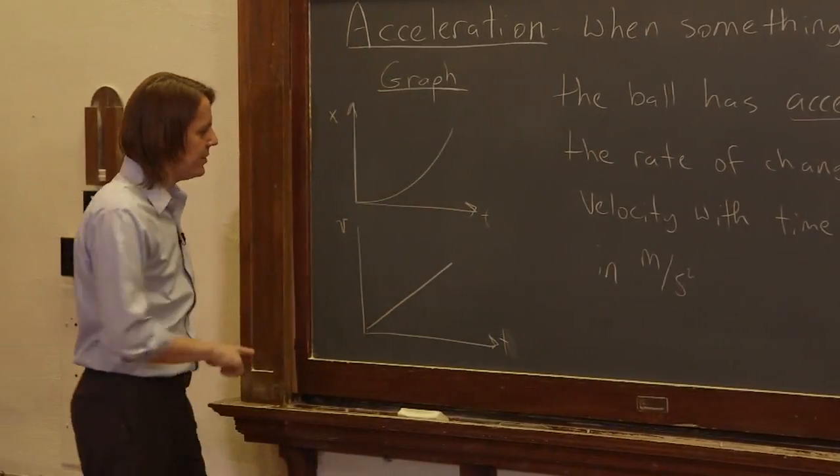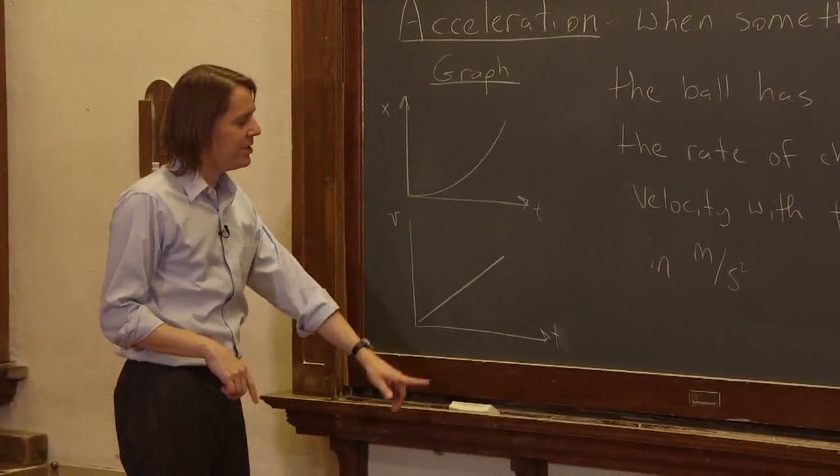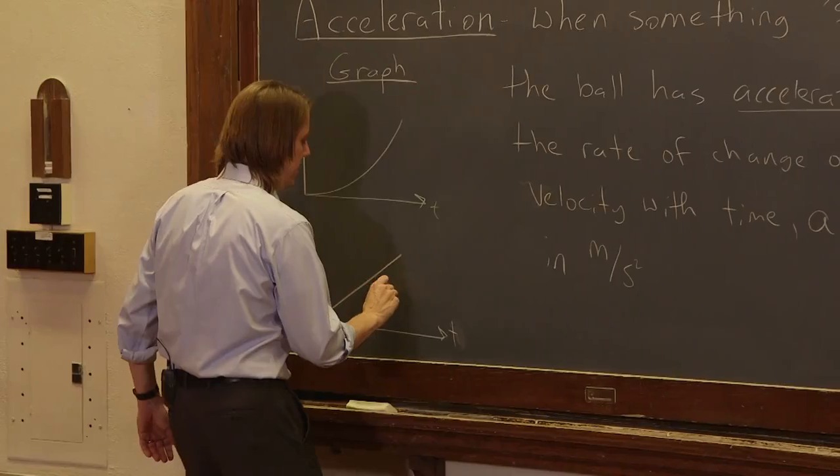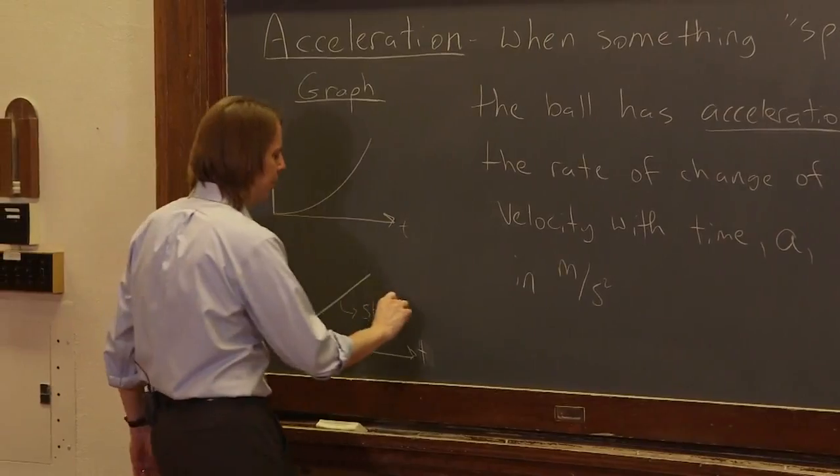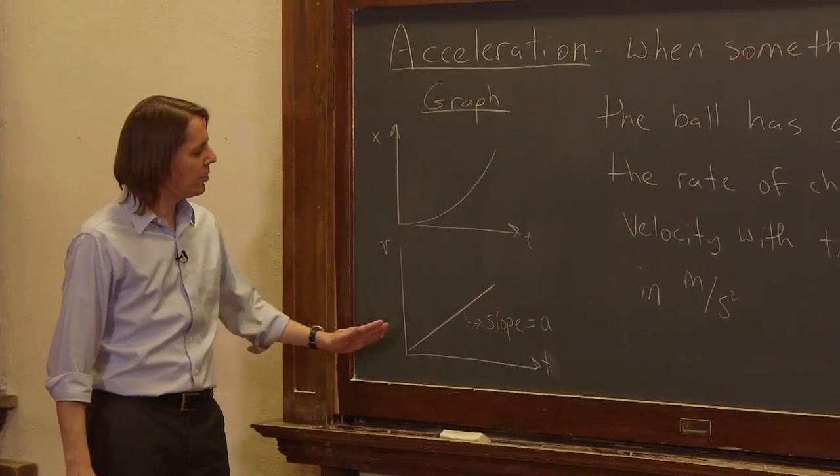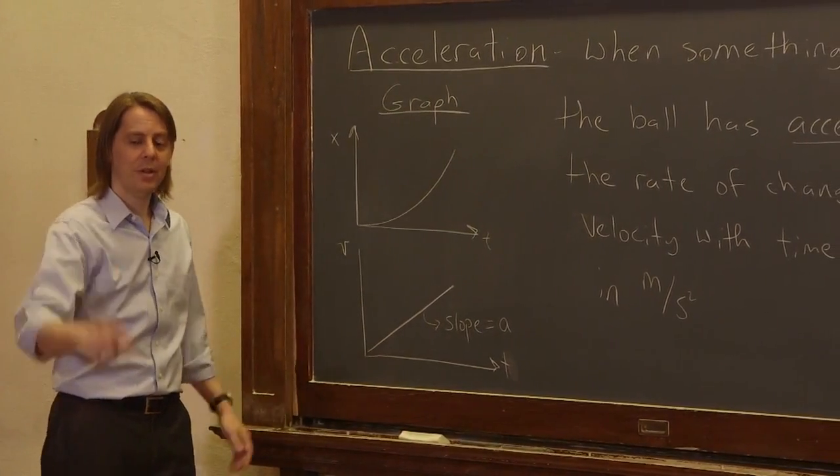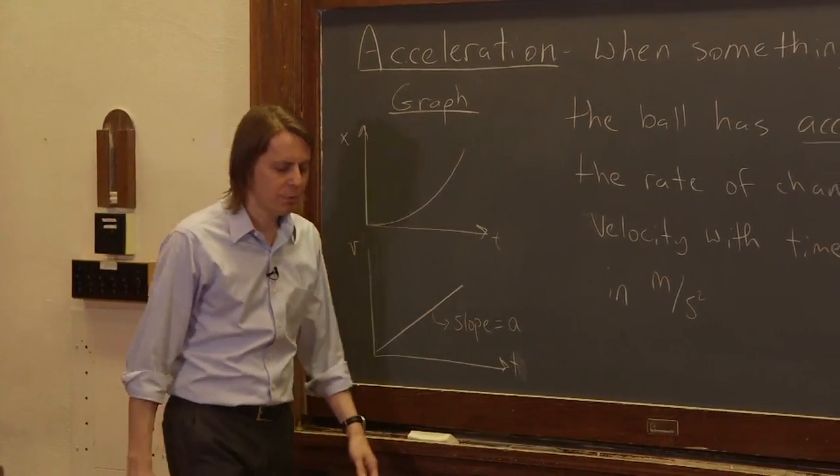And we can get it, just like with the velocity coming from the position curve, we can get the acceleration from the velocity curve. The slope of the velocity time curve equals the acceleration. So here, if this really is what happened in the demo, then we had a constant acceleration, which we do when you tilt something like that.